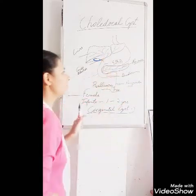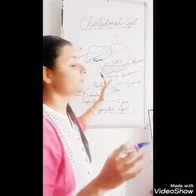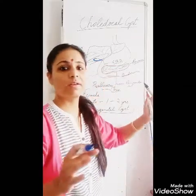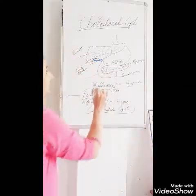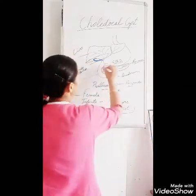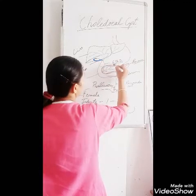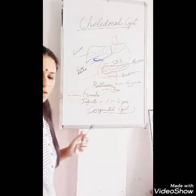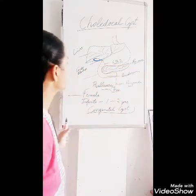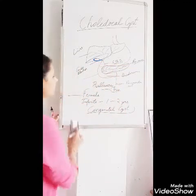So the congenital cyst occurs in the bile duct network, basically in the common bile duct area. This is the congenital cyst.